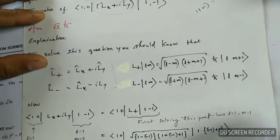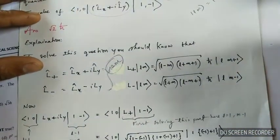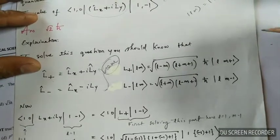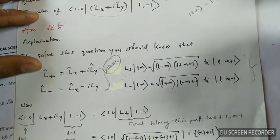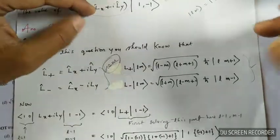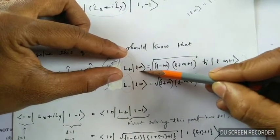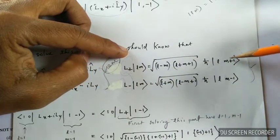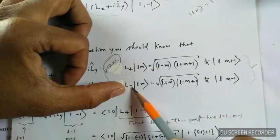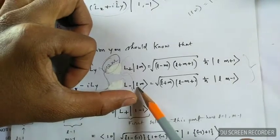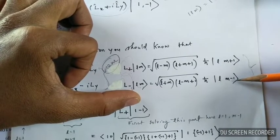You also have to remember the eigenvalue equations for these two operators. When the operator L₊ operates on the ket state |lm⟩, it increments the quantum number m by one. If you operate L₋ on the state |lm⟩, it decreases the quantum number m by one.